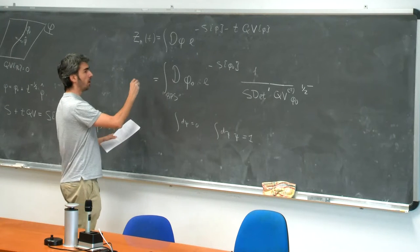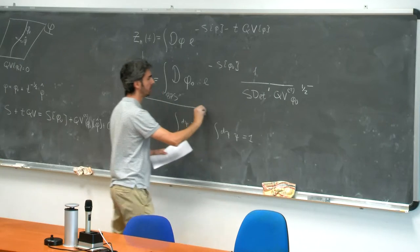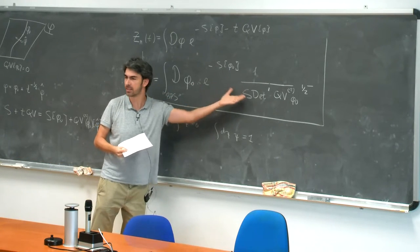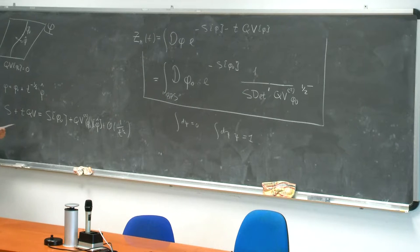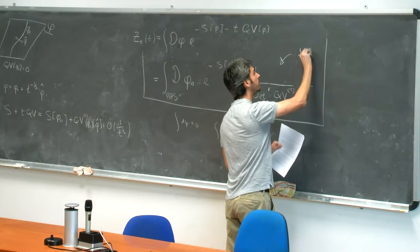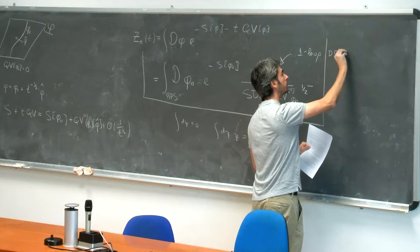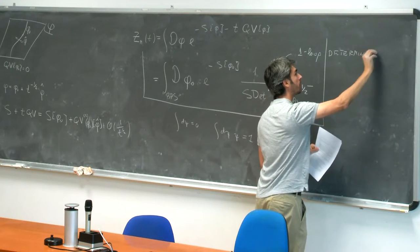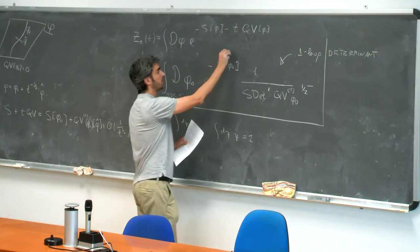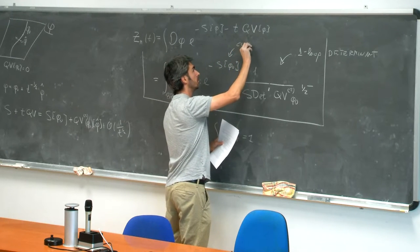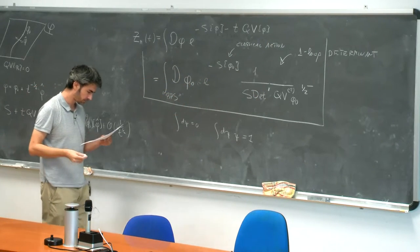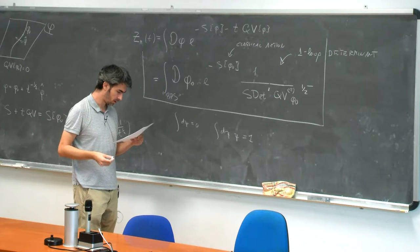This is our main formula. In fact, you recognize that it is an infinite-dimensional version but it looks the same as what Leo showed yesterday. This object is called the one-loop determinant, because in fact it's computed at one loop. While this object here is called the classical action, because it's the classical action evaluated on these special configurations.